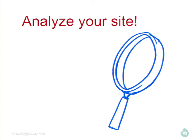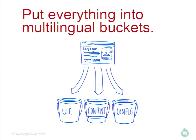The important thing when you're doing multilingual in Drupal 7 is you need to really understand your site and where content is coming from, and you have to chunk things out. The multilingual modules tend to be focused around three different buckets: a UI bucket, a content bucket, and a config bucket. In reality, that config bucket should be way bigger than all the other ones because it's kind of the dumping ground of everything that's not UI and content.